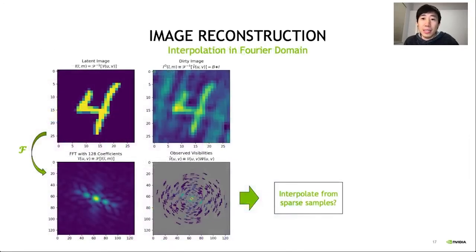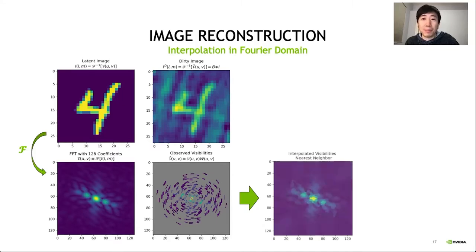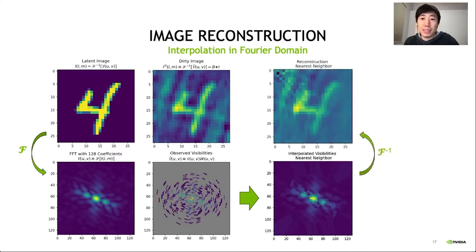Another idea is to work directly in Fourier space. Using the sparse samples, one can try interpolating to fill in the Fourier domain. While this idea is good in principle, in practice, the results are generally not better than the dirty image.